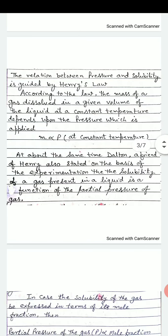The relation between pressure and solubility is guided by Henry's law. According to the law, the mass of a gas dissolved in a given volume of the liquid at a constant temperature depends upon the pressure which is applied. M is directly proportional to P at constant temperature.